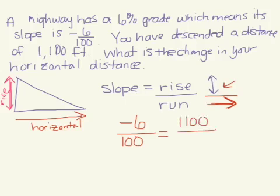They're asking us what's the change in our horizontal distance, so that's what we're looking for, the run. What we have set up is called a proportion.